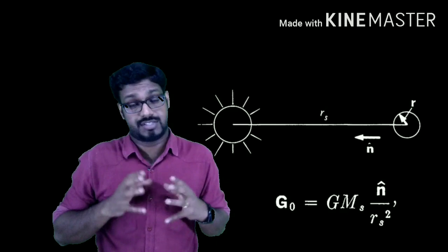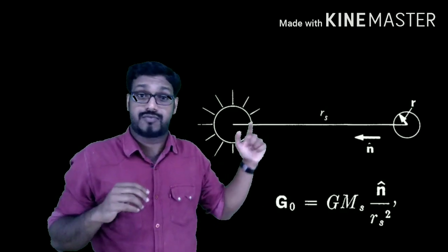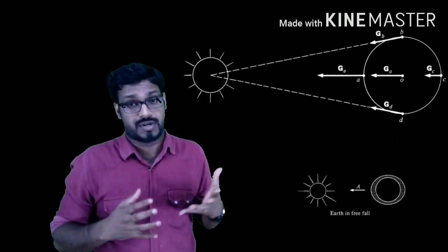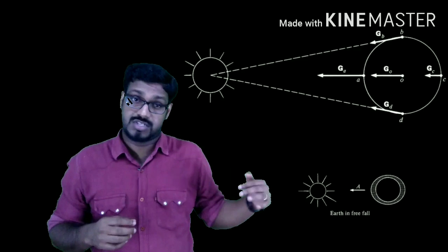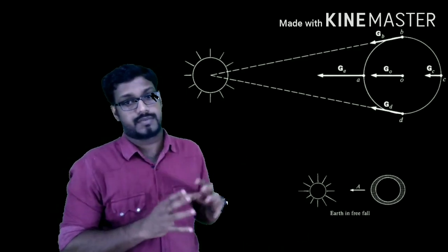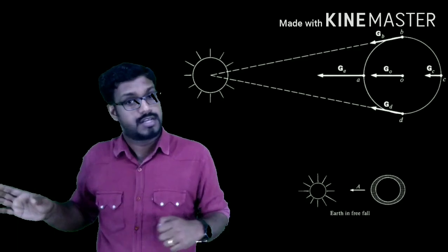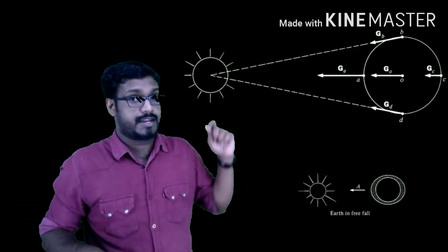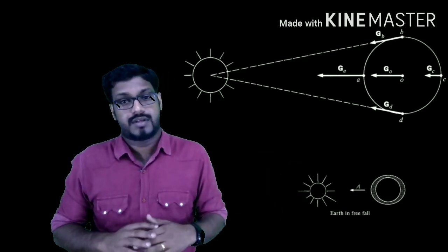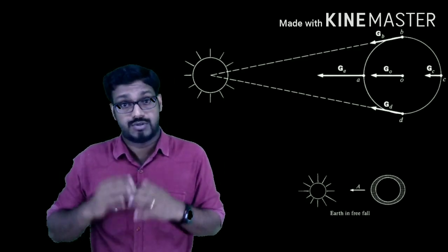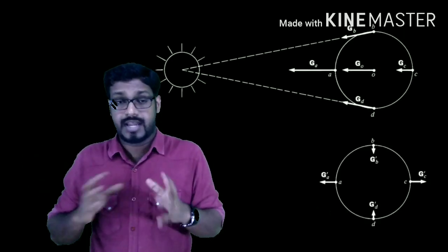The center of Earth is moving towards the Sun with acceleration g₀. But since Earth is quite a large object, different parts of Earth will have different acceleration. I take four points on Earth — A, B, C, D — as represented in the figure, where A is very close to the Sun, C is very far away from the Sun, and B and D are at a moderate distance from the Sun. The acceleration due to gravity of the Sun at points A, B, C, D when observed from a coordinate system attached to the Sun are g_A, g_B, g_C, and g_D respectively, and g₀ is the acceleration at the center of Earth.